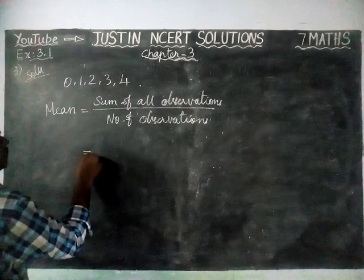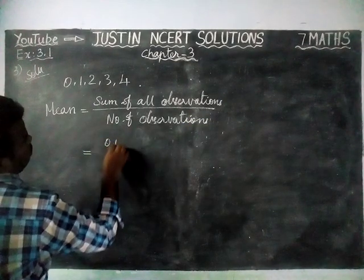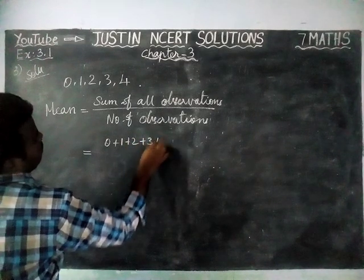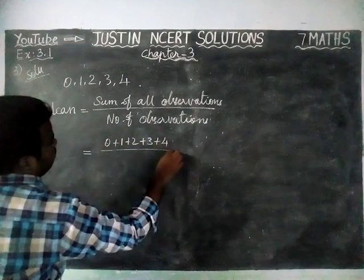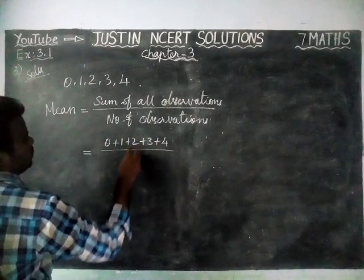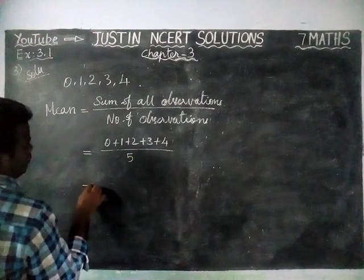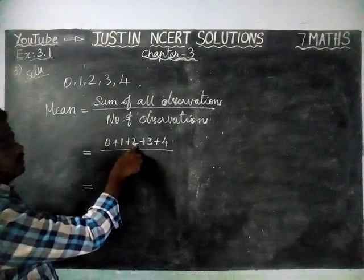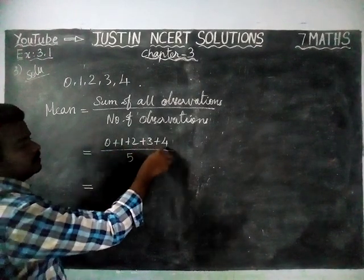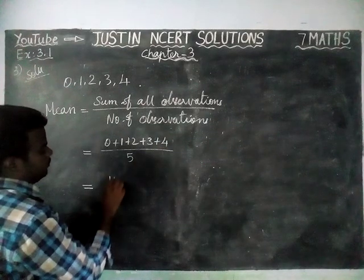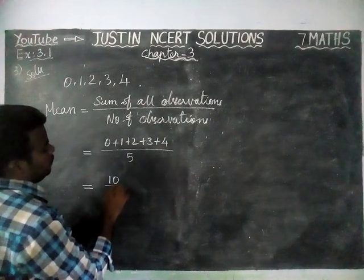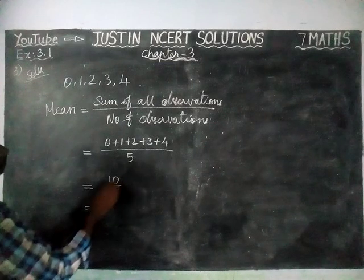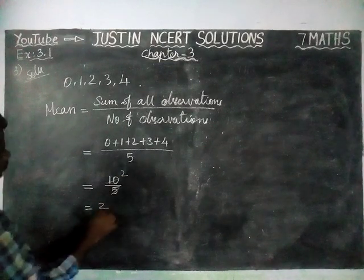Mean equals the sum of all observations: 0 plus 1 plus 2 plus 3 plus 4, divided by the total number of observations, which is 5. That gives us 10 divided by 5. Since 2 times 5 is 10, the mean is 2.